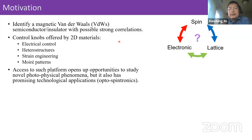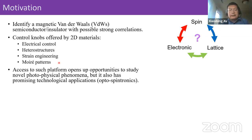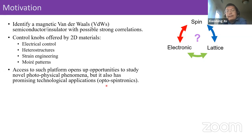Another motivation is to get a system where we can study optical physics such as excitons, but with time-reversal symmetry breaking. Once we have those systems, we have control knobs offered by 2D materials — electric controls, heterostructures to engineer proximity effects, strain engineering to control band structures and symmetry. We have twist angle control to engineer moiré patterns and flat band physics in magnets. The main motivation is: can we find a system with strong correlation between spin, electronic, and lattice degrees of freedom?